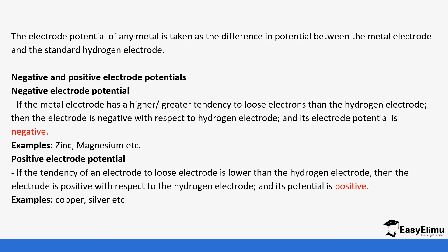Copper is an example of a positive electrode potential. Looking at where hydrogen sits in the electrochemical series, it falls between copper below it and zinc and magnesium above it. Zinc, magnesium, and others above hydrogen have negative electrode potentials, while silver and copper below hydrogen have positive electrode potentials. This tells us copper and silver tend to gain electrons, while magnesium and zinc tend to lose electrons, compared to hydrogen.